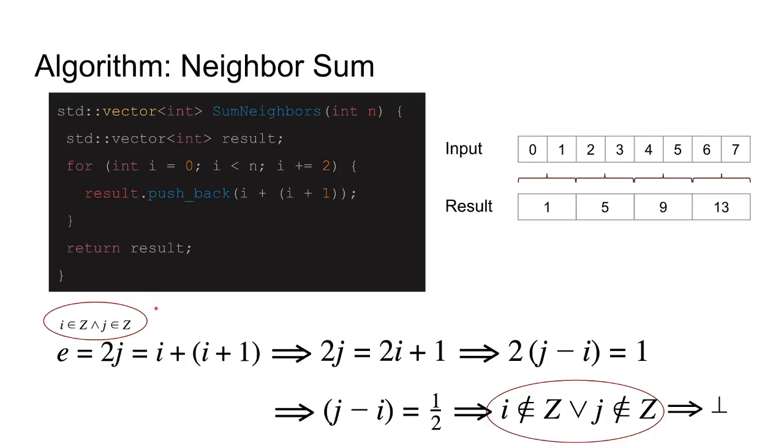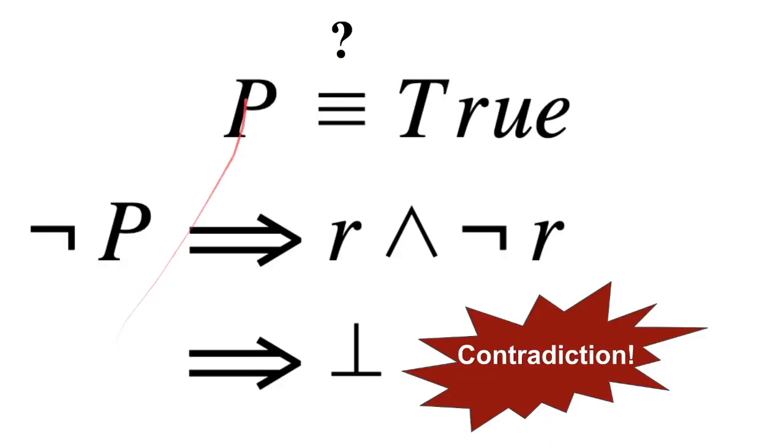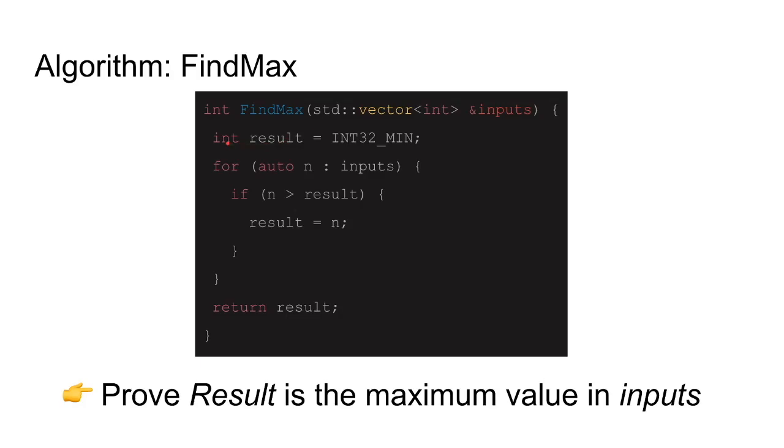That's all that is to it. You start from, if you want to prove something to be true, you start from assuming it's false. You try to get to something bad which is a contradiction, and then you go back and say, hey, P cannot be false, it has to be true.